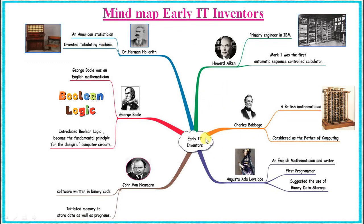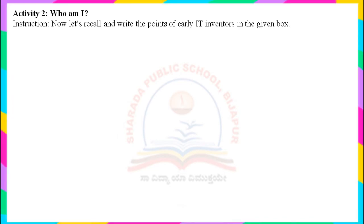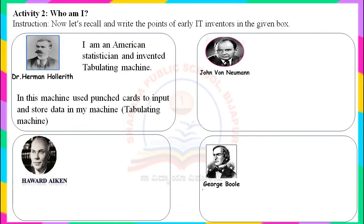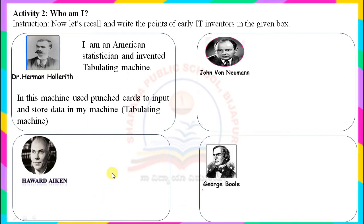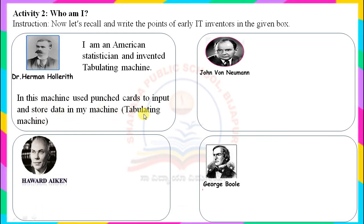Children, hope you understood about early IT inventors. Let us solve one activity based on this topic. It is given in Curriculum Worksheet No. 1, Activity No. 2 — Who Am I? Recall and write the points of early IT inventors in the given box. Here we have four IT inventors with a box. You have to write about their information and invention. One example is done for your reference: Dr. Herman Hollerith — I am an American statistician and invented the Tabulating Machine. In this machine, punch records were used to input and store data. The remaining three you will write on your own.